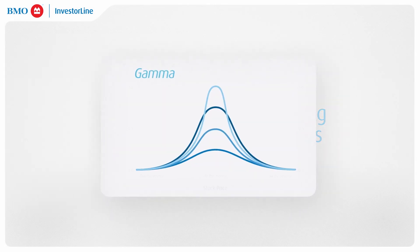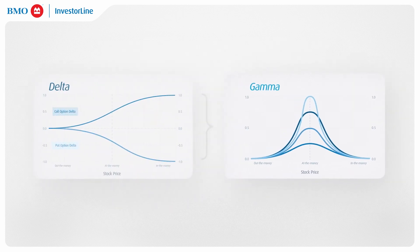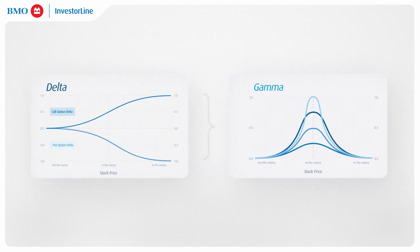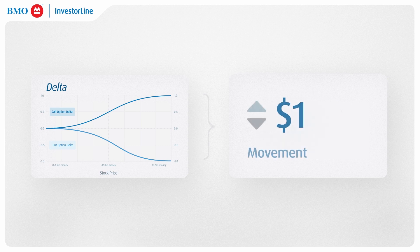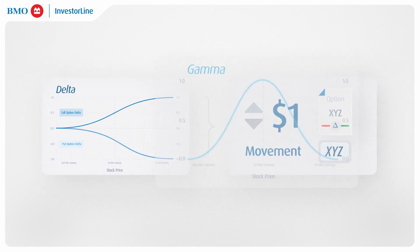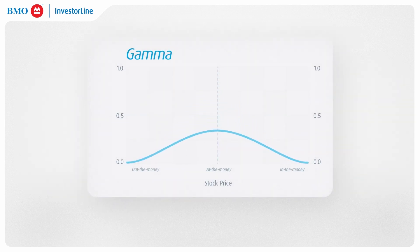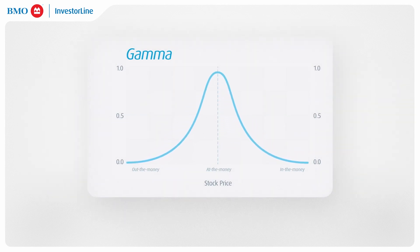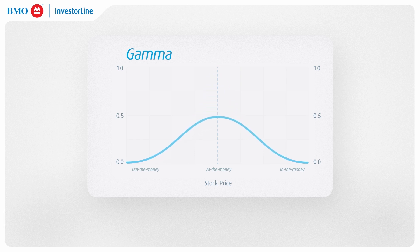Diving deeper into the Greeks, we encounter gamma, a key derivative of delta, which itself is one of the most dynamic option Greeks. Recall that delta predicts the change in an option's price with a $1 movement in the underlying asset. Gamma takes us a step further by measuring how delta itself changes as the underlying asset moves. It tells us about the rate of change in delta over time.